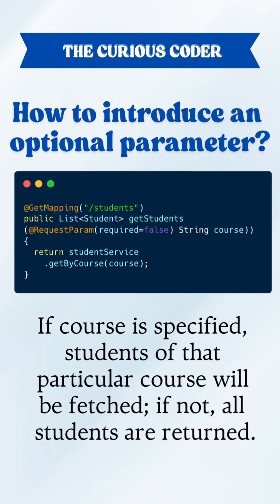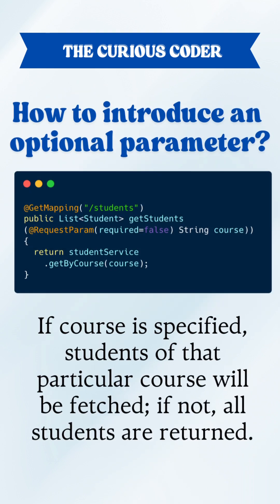Also, if we want, we can make it an optional parameter — that is, it will fetch all students if course is not provided, but will fetch only filtered data if course is provided.